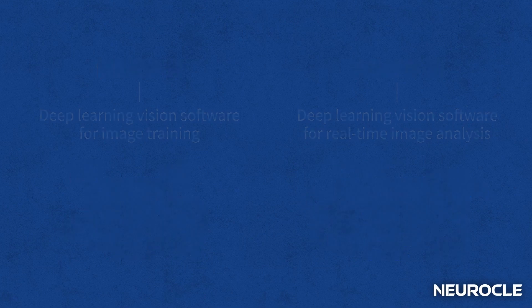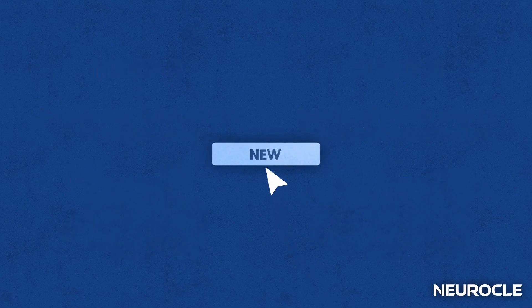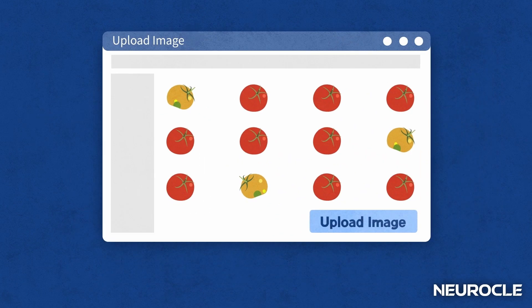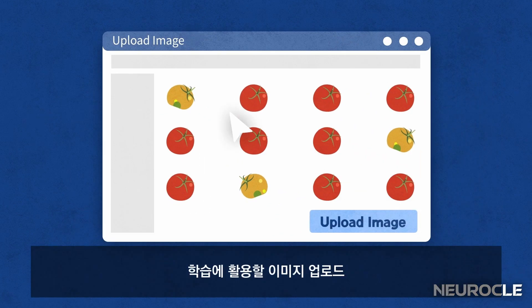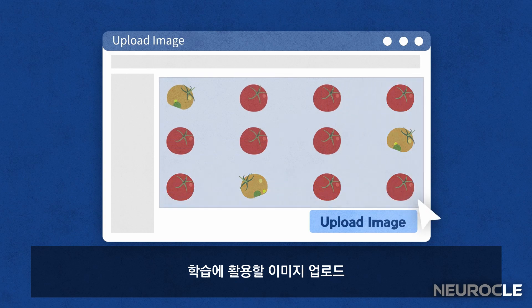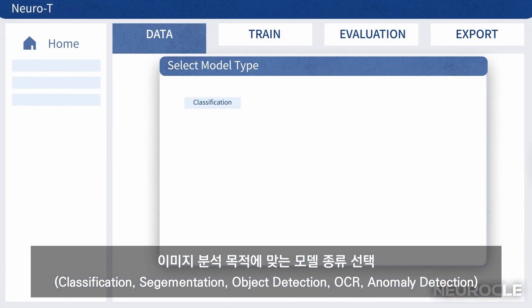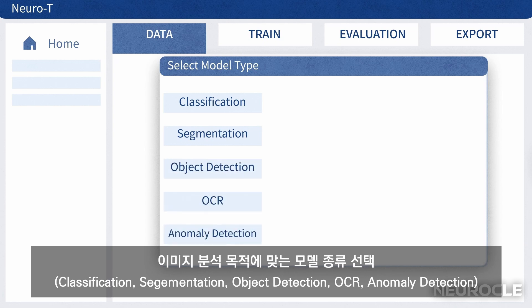Let's take a look at how to create deep learning vision models. In NeuroT, first upload your training images. Go to the Data tab and select the model type that best fits your image analysis objectives.